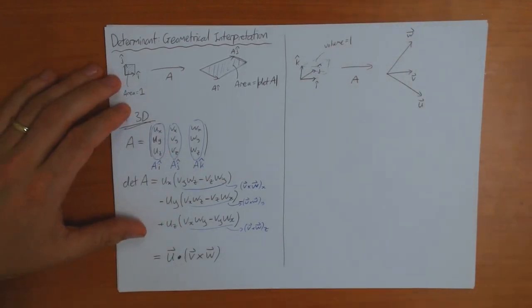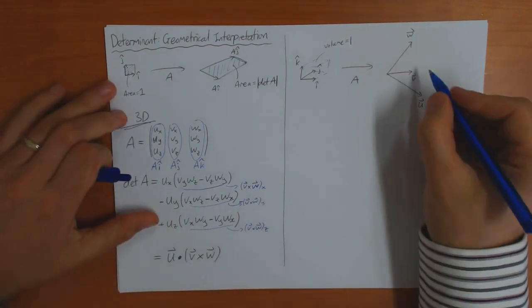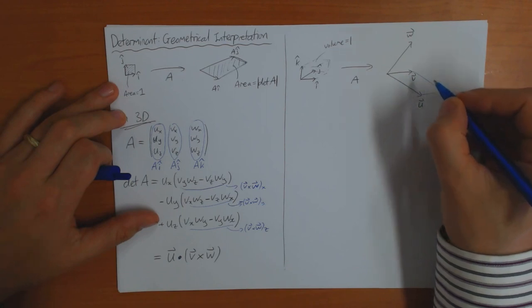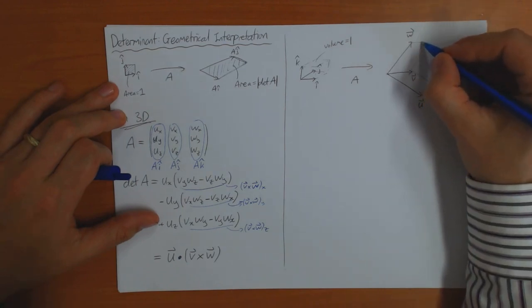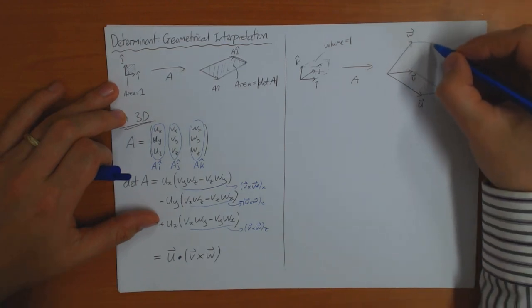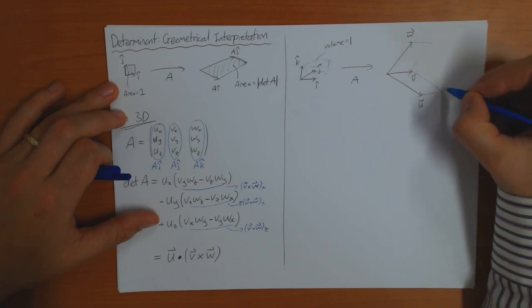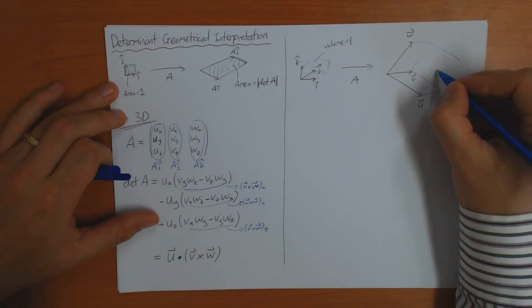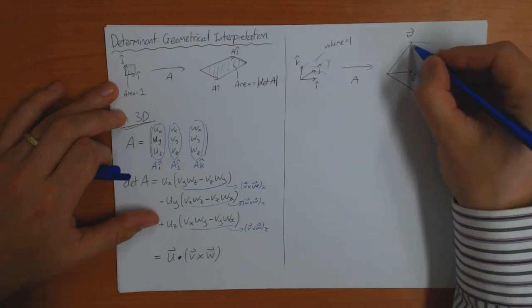So now you have to consider the shape, the volume of the shape formed by these three vectors here. So that looks like this, and this, and do, do, do, do here, and this, and this, and this.